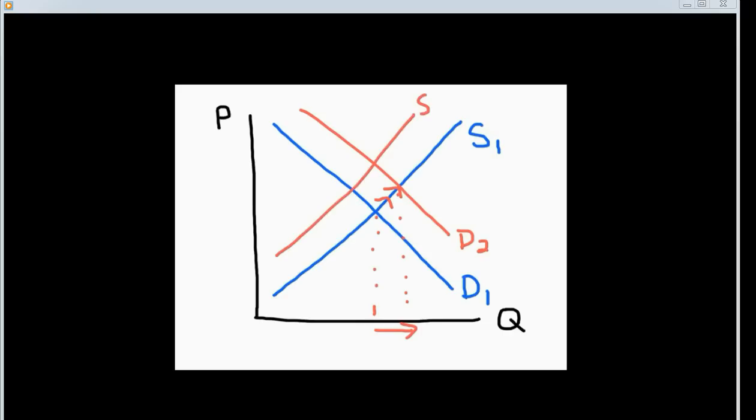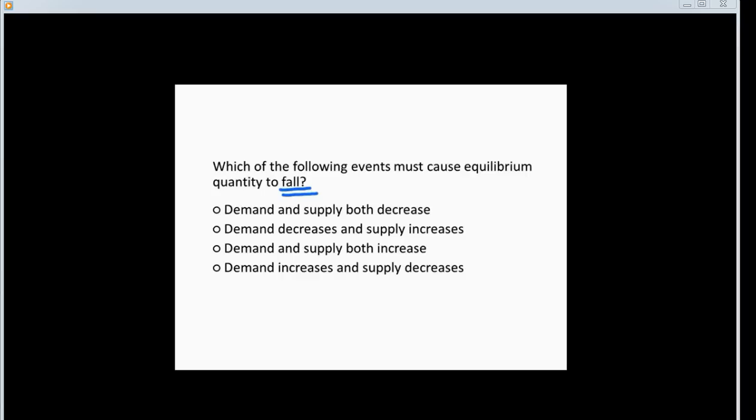If both demand increases and supply decreases, even though the shift in supply causes upward pressure on prices, the change in the equilibrium quantity is ambiguous without knowing the magnitude of that shift. Therefore, you know that to guarantee a decrease in equilibrium quantity, demand cannot increase.